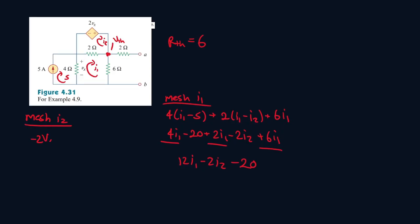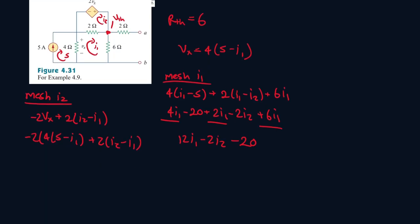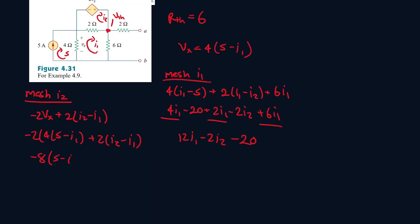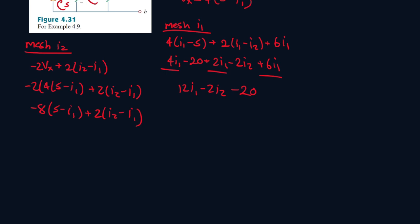So it will be minus 2Vx plus 2 I2 minus I1. Let's find a way to represent Vx. So Vx will be 4 times 5 minus I1 because 5 is entering the positive terminal and I1 is entering the negative terminal. So it will be minus 2, 4 times 5 minus I1 plus 2 I2 minus I1. So this one will be minus 8, 5 minus I1 plus 2 I2 minus I1. Let's FOIL the minus 8. So this will be minus 40 plus 8 I1 plus 2 I2 minus 2 I1. Collect like terms. This will be 6 I1 plus 2 I2 minus 40.